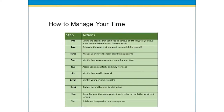What does your manager want you to spend your time on? Let's take a look at this chart, which will walk you through the steps of managing your time. In step one, you should define the dreams that you hope to achieve and the regrets you have about accomplishments you have not made. From there, you can go into step two, which is articulating the goals that you want to establish for yourself. When you articulate the goals, you want to identify exactly what it is that you want to succeed in and achieve. From there, you can go to step three.